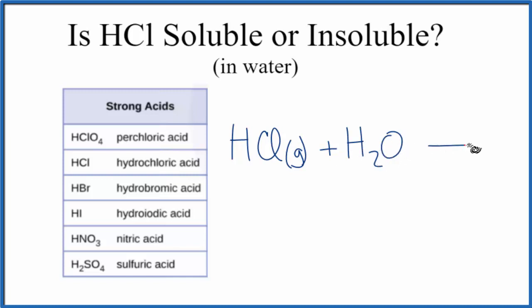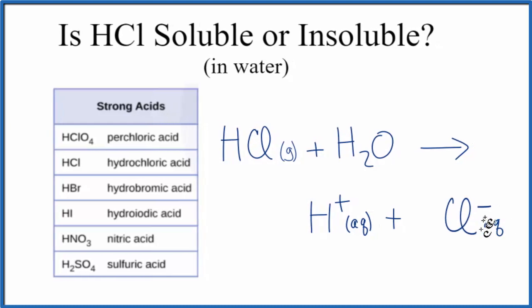It breaks apart into its ions: H plus and Cl minus. These ions are dissolved in the water. Sometimes you'll see people write H2O over the arrow to show you're dissolving it in water. Because they're dissolved in water we write a little aq after them, that means aqueous, dissolved in water. So HCl gas bubbles through water and is soluble, breaking apart into these ions.